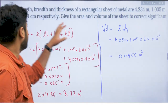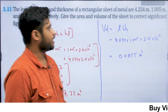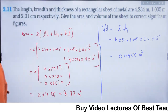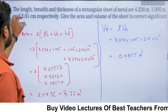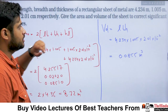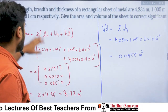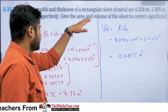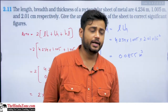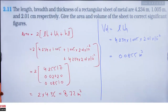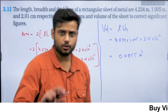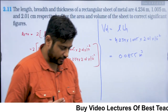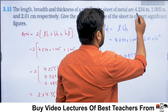Question number 11 is: the length, breadth, and thickness of a rectangular sheet of metal are given. They are asking to give the area and volume of the sheet to correct significant figures. When we have two quantities and multiply or divide, our answer will have as many significant figures as the minimum number.